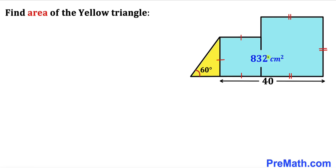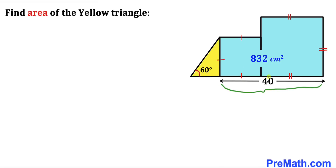Welcome to pre-math. In this video we have got two blue squares along with a yellow triangle put together as shown in the diagram, such that the combined area of these blue squares is 832 centimeter square, this horizontal length is 40 centimeters, and the angle in the yellow triangle is 60 degrees. Our task is to calculate the area of this yellow triangle.